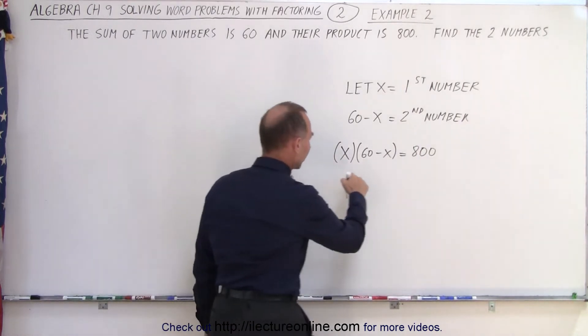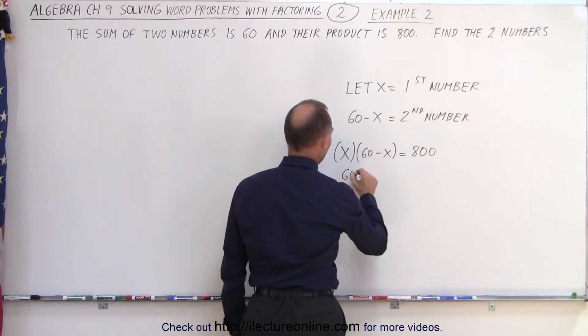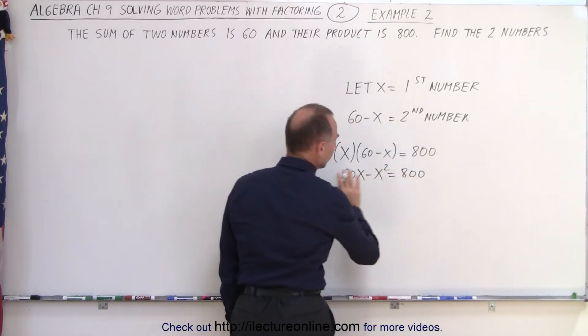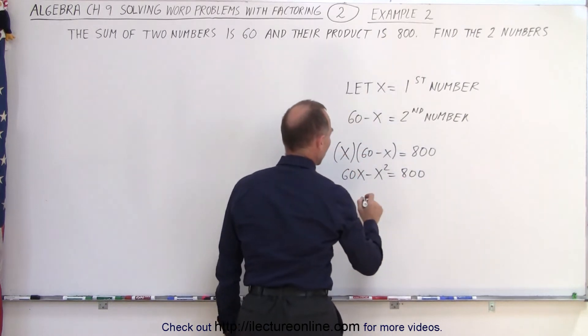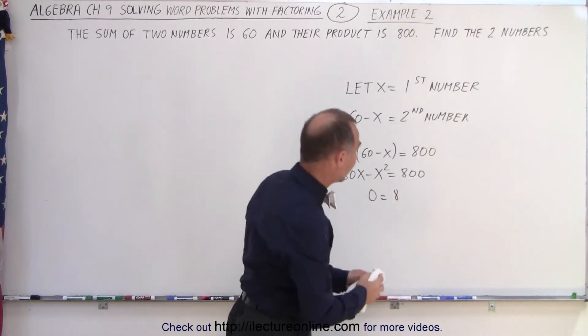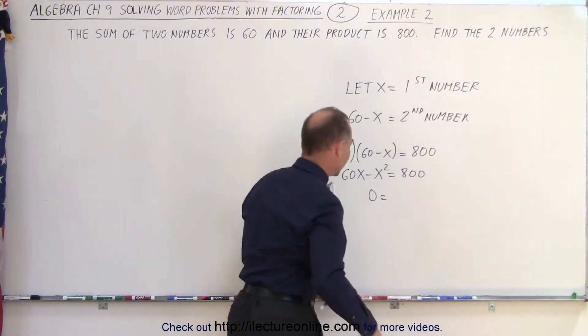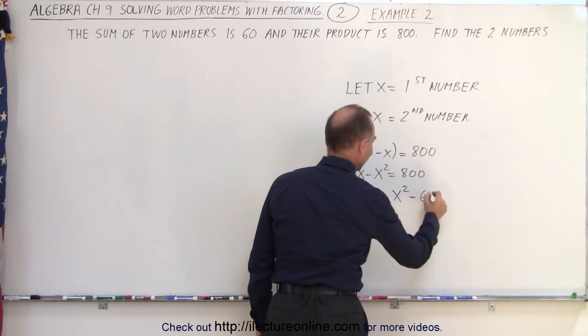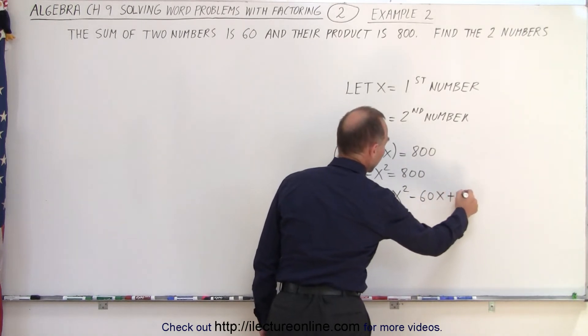Of course, we first must multiply things out, so we get 60x minus x squared equals 800, and then moving everything over to one side, we get 0 equals x squared—let's try this again—x squared minus 60x plus 800.